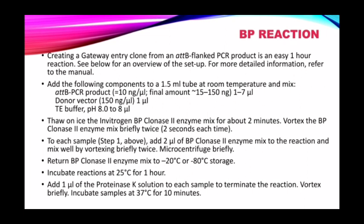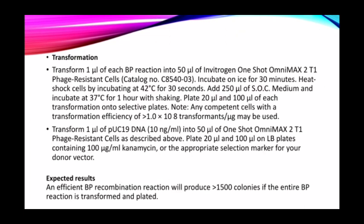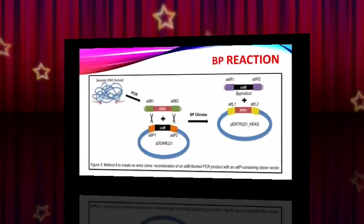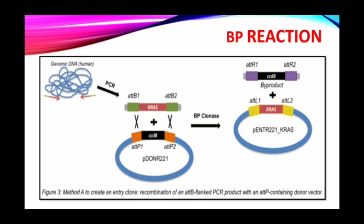Add one microlitre of proteinase K solution to each sample to terminate the reaction and vortex briefly. Incubate the samples at 37°C for 10 minutes. After transformation, we will get our expected result: the entry clone. An efficient BP recombination reaction will produce more than 1,500 colonies if the entire BP reaction is transformed and plated. In the diagrammatic representation of the BP reaction, we take genomic DNA of interest obtained through PCR, combine it with a donor vector using the BP clonase enzyme mixture, and get the final product: a gateway entry clone for further reaction.